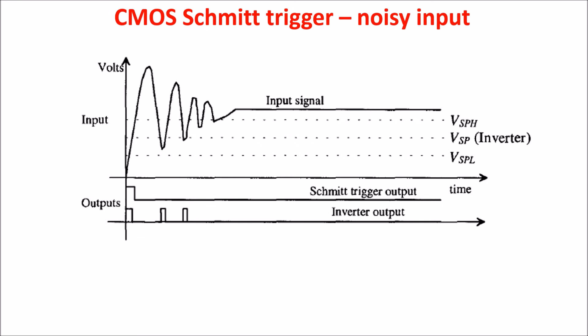As a first application, consider a pulse with ringing, which is a common voltage waveform encountered in buses or lines interconnecting systems. If this voltage is applied directly to a logic gate or inverter input with a VSP of 2.5V, the output of the gate will vary with the period of the ringing on top of the pulse. Using a Schmitt Trigger with properly designed switching points can eliminate this problem.